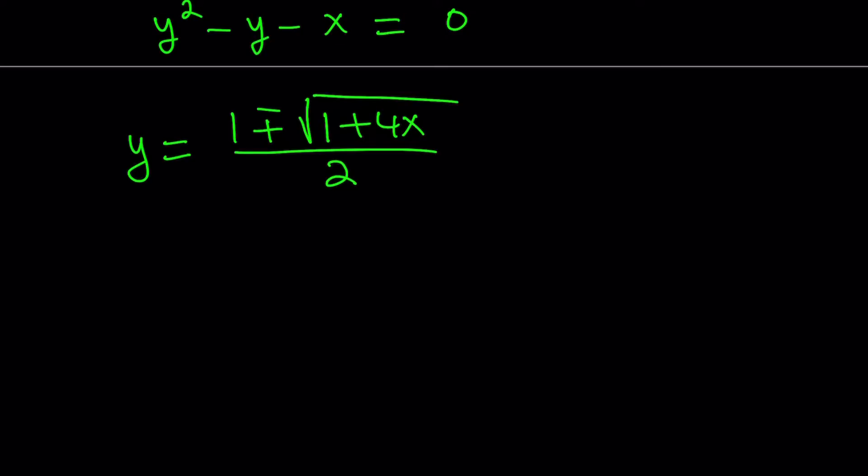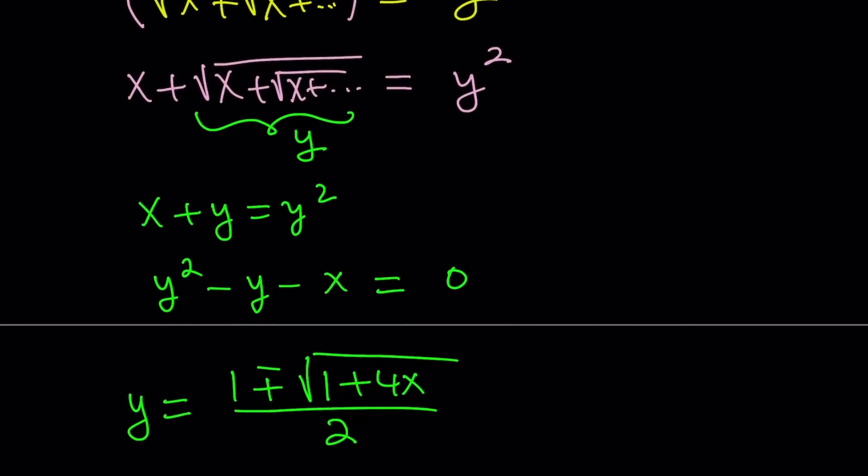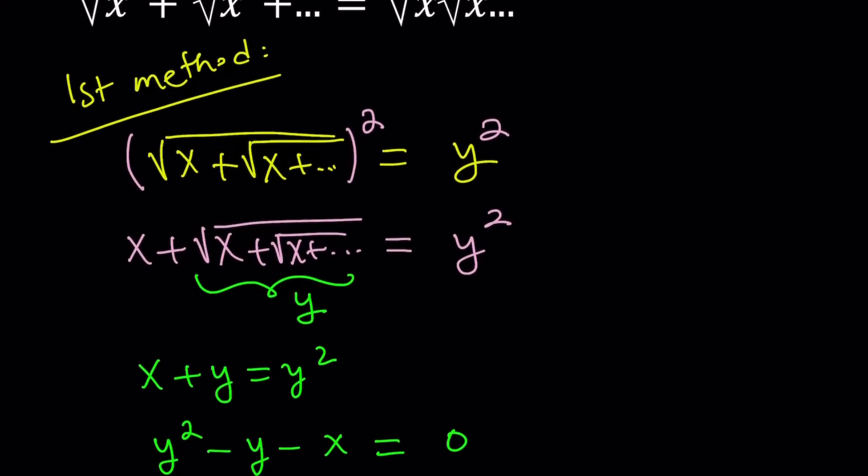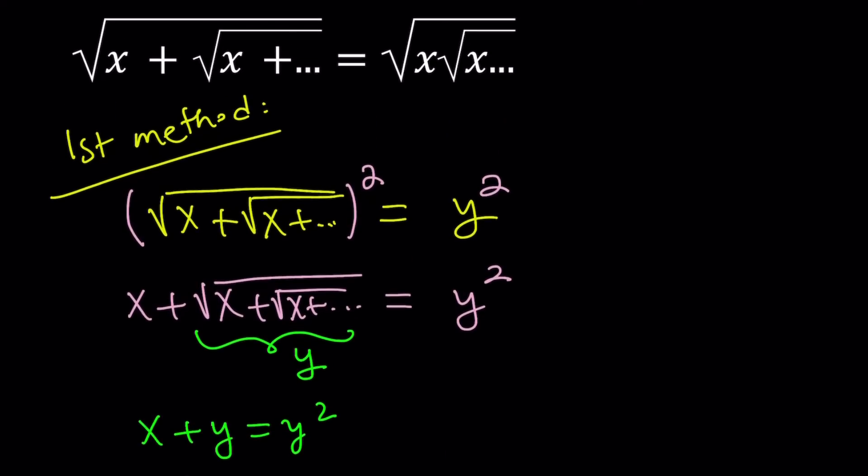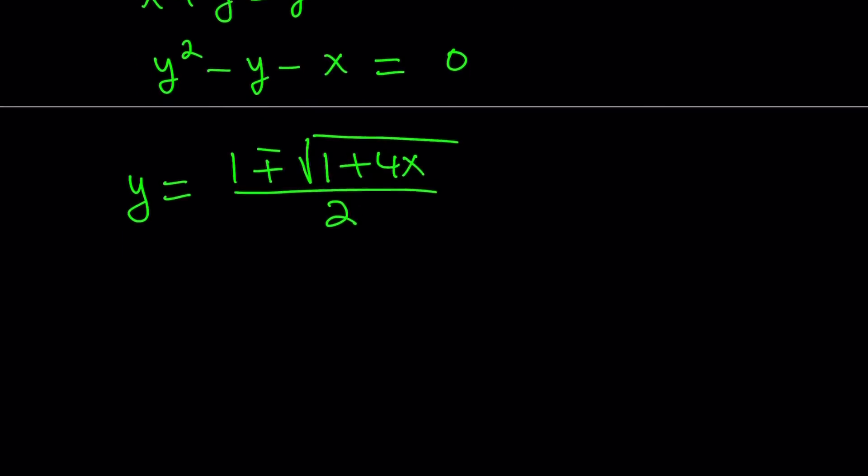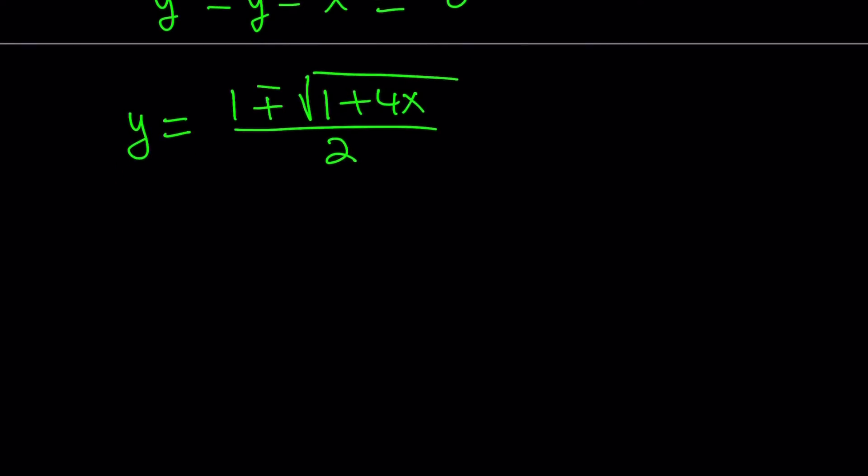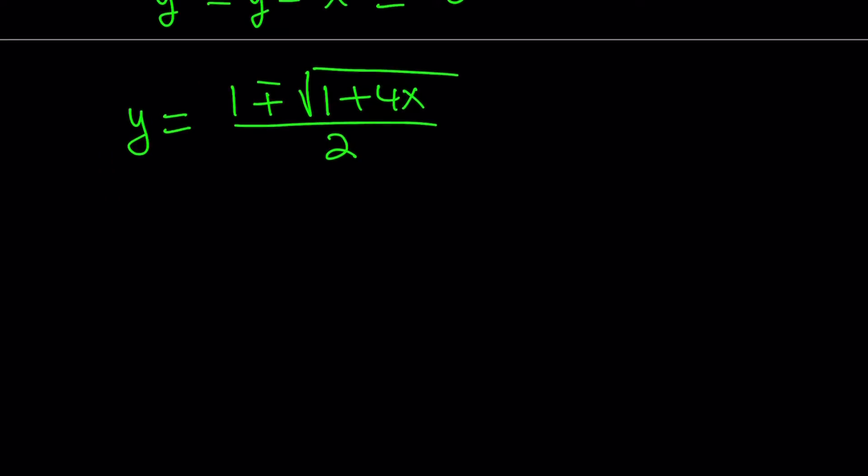And now we get two solutions, and we don't like that, because this is like a, I mean, it should be definite, right? Definitely this converges, and it should have a definite value in terms of x. But how do we distinguish between these two solutions? One of them is not going to work.